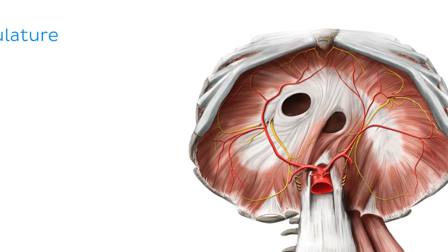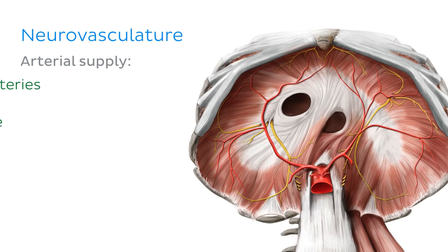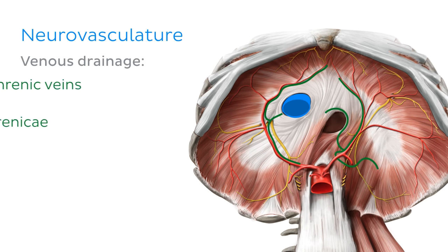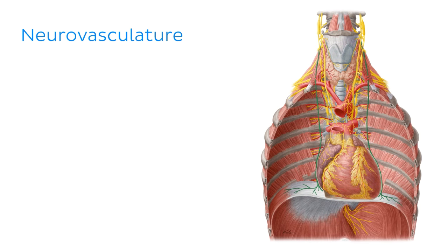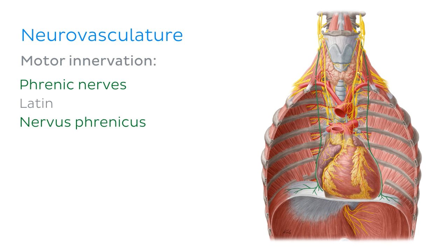Time to move on to the neurovasculature of the diaphragm. The diaphragm receives most of its arterial supply from the left and right inferior phrenic arteries. The venous drainage mirrors this and is carried out by the inferior phrenic veins. The diaphragm receives motor innervation from the left and right phrenic nerves, which we can see here highlighted in green. Each phrenic nerve contains fibres from the spinal roots C3 to C5.